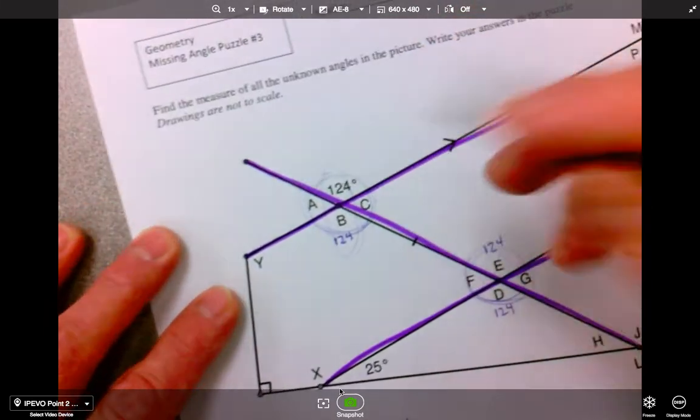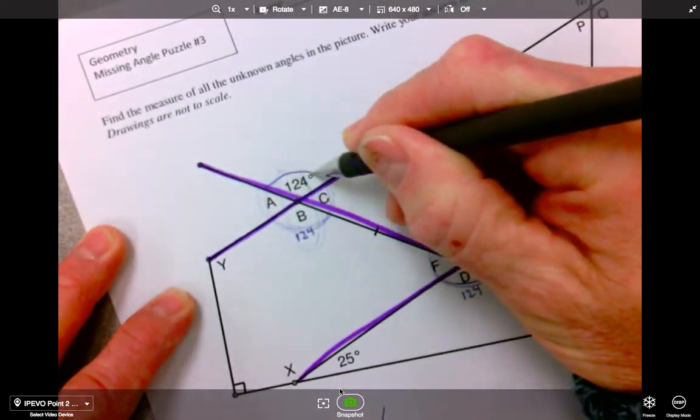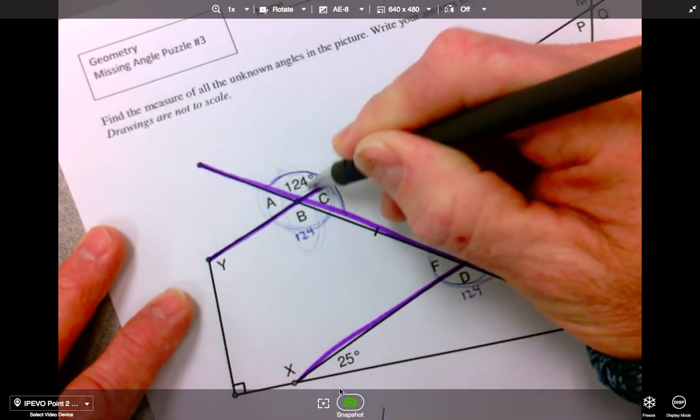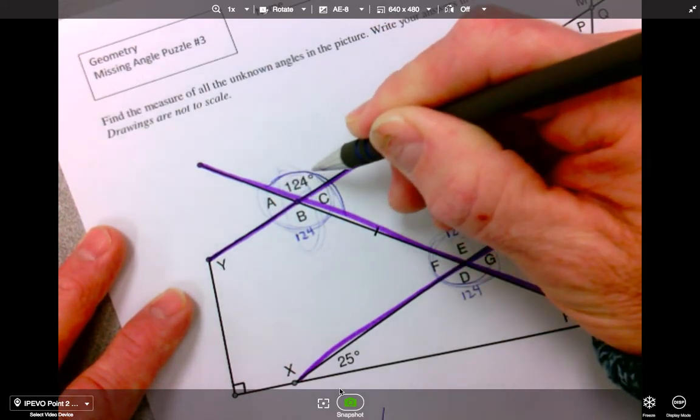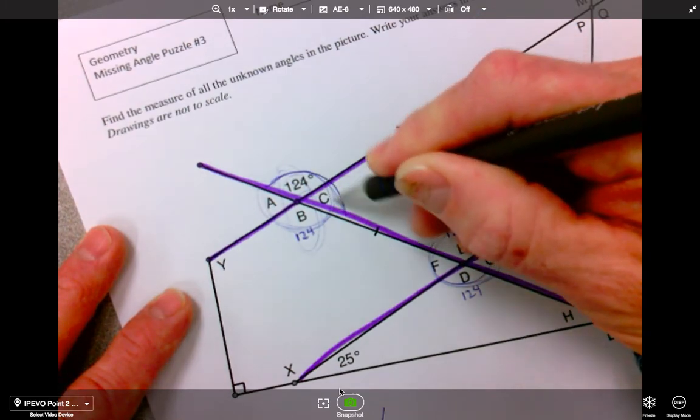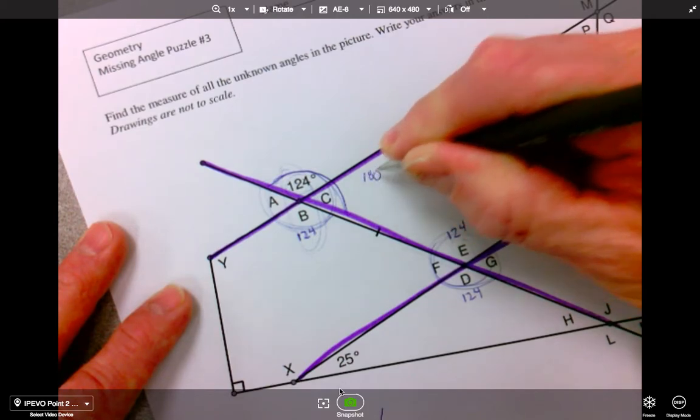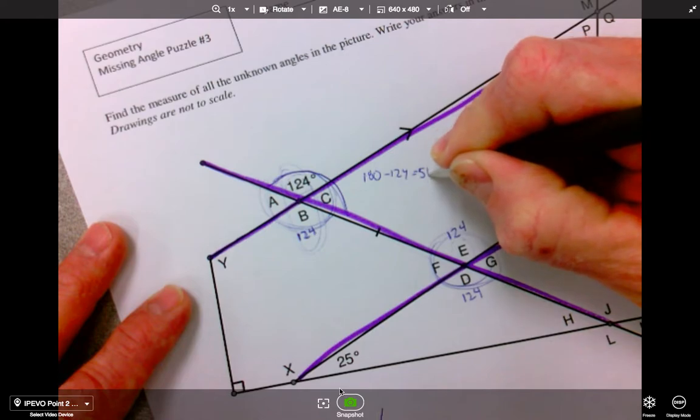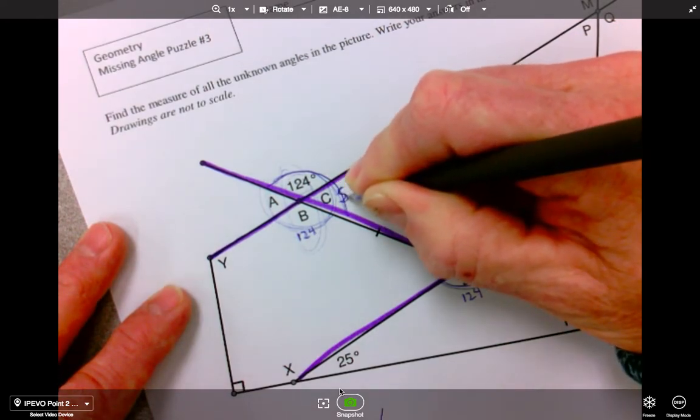let's look here. I can see a supplementary angle. I can see 124. 124 plus something will give me 180. So I need to figure this out. So I need to do 180 minus 124, and that gives me 56. So this must be 56.